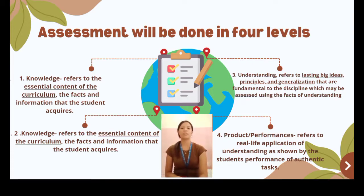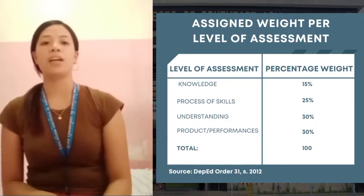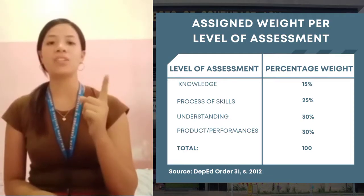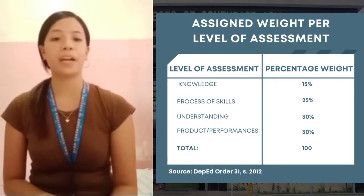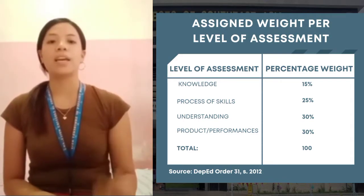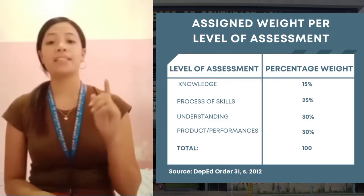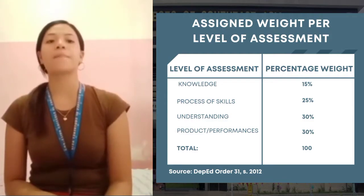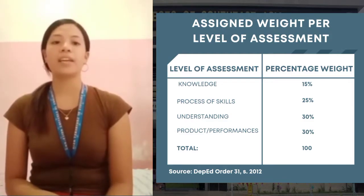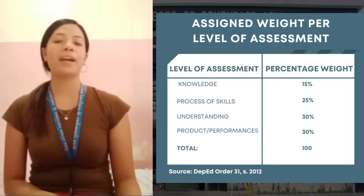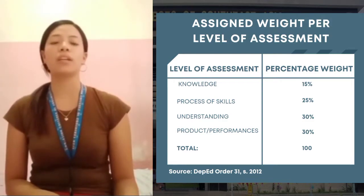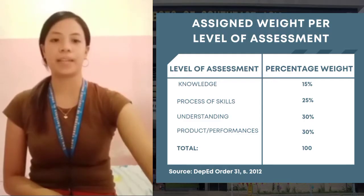The assigned weights per level of assessment are as follows: knowledge has a 15% weight, process of skills has a 25% weight, understanding has a 30% weight, and products and performances has a 30% weight, for a total of 100%. At the end of the quarter, the student's performance will be described based on the prescribed level of proficiency, which has equivalent numerical values. The proficiency level is computed from the sum of all the student's performance across the various levels of assessment.